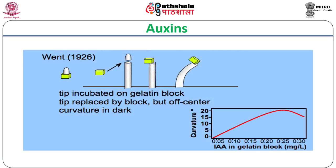In this module, we shall study the first class of plant hormones called auxins. Auxin was identified and named by Dr. Fritz Went in 1926.